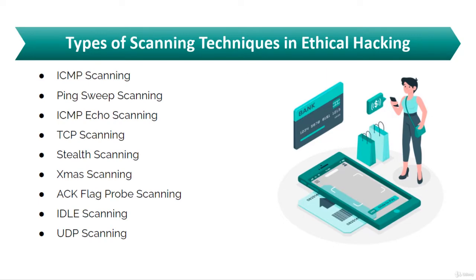The first one is ICMP scanning, that is checking for live systems. ICMP scanning, that is Internet Control Message Protocol scanning, is used to check live systems. Ping scan involves sending ICMP echo requests to a host. If the host is alive, it will return an ICMP echo reply. This scan is useful for finding active devices or determining if ICMP is passing through a firewall.